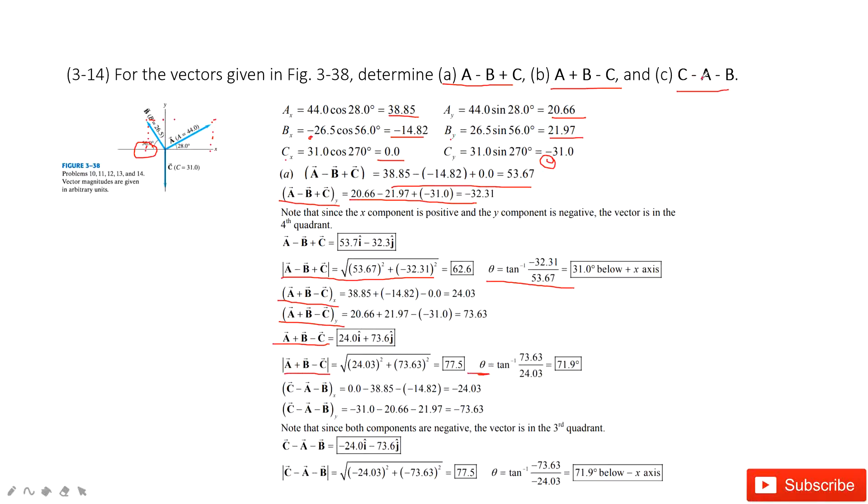And then for the c subtract a and subtract b, for the x component, we can get it is cx subtract ax subtract bx. And then we get it. Similarly, for the y component, in this one, we get two components for this vector.